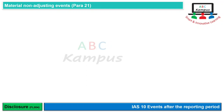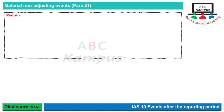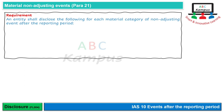Next ہے material non-adjusting events۔ Non-adjusting events کی adjustment تو نہیں کی جاتی، لیکن کچھ situations میں standard require کرتا ہے کہ limited disclosures دی جائیں۔ Requirement یہ ہے: an entity shall disclose the following for each material category of non-adjusting event after the reporting period۔ ہر non-adjusting event کا disclosure نہیں ہوتا — صرف material non-adjusting event کا disclosure دیا جاتا ہے۔ Disclosure میں nature of the event بتانی ہے جیسے fire damage، NRV write-down، یا کسی major customer کی bankruptcy.